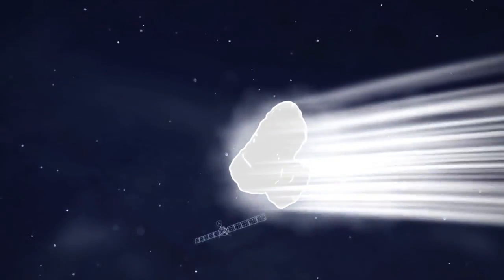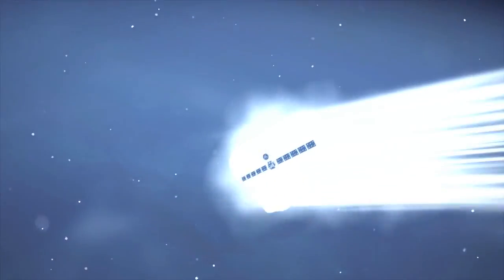Comets are the most primitive bodies in the solar system. By studying that material, we learn about the chemistry of the early solar nebula.